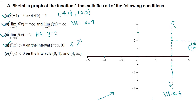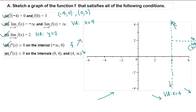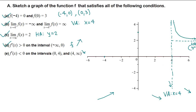The function is decreasing on (0, 4) and (4, ∞). Whenever we have two asymptotes and know the function is decreasing, the graph must look like this to satisfy both asymptotes. We can make it slightly nicer — the graph comes down from the right toward y = 2.